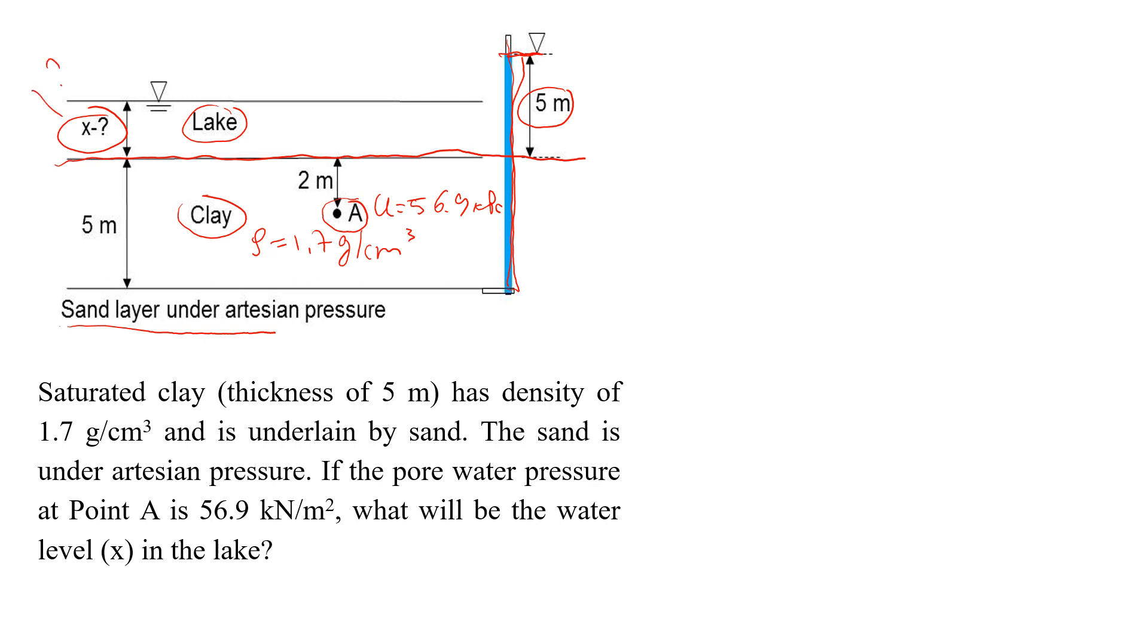Okay, so this is probably one of the most difficult examples, but the solution is not that difficult. We are going to start with the definition of the pore pressure at point A. So point A pore pressure will be equal to hydrostatic pore pressure that comes from the weight of the water above point A, plus additional pore pressure that comes from the seepage that takes place through the clay layer. And then we know that this should be equal to 56.9 kPa. That's what we are given.